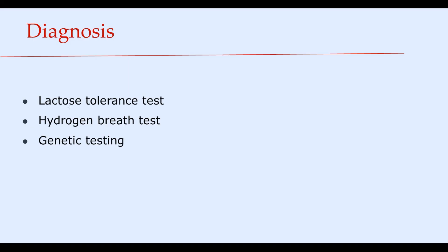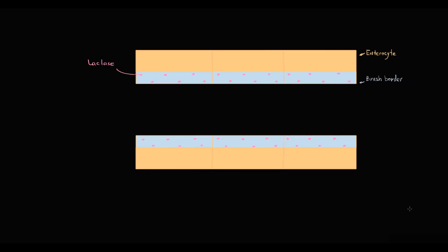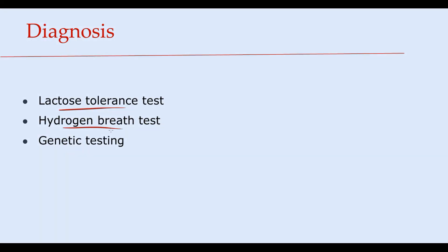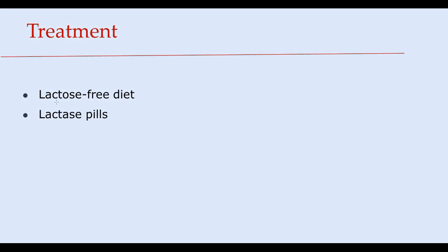The diagnostic options include the lactose tolerance test: when a person consumes a lactose solution, it should be degraded by lactase, and when glucose and galactose are absorbed into the blood, blood glucose levels will rise. If lactase is absent, no degradation occurs and there will be no increase in blood glucose. The second option is the hydrogen breath test, and the third is genetic testing to determine a mutation associated with lactose intolerance.